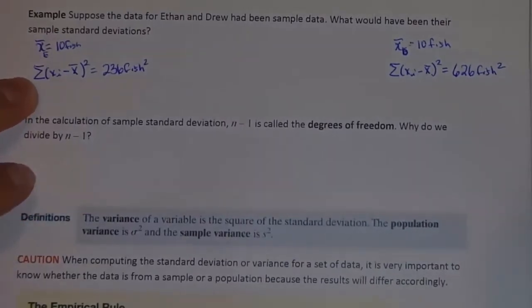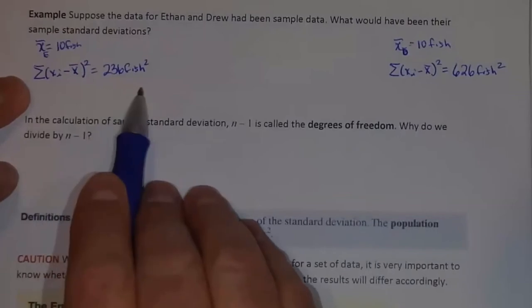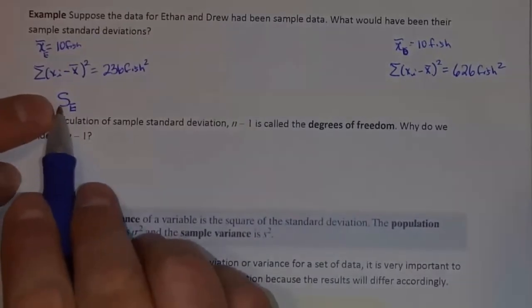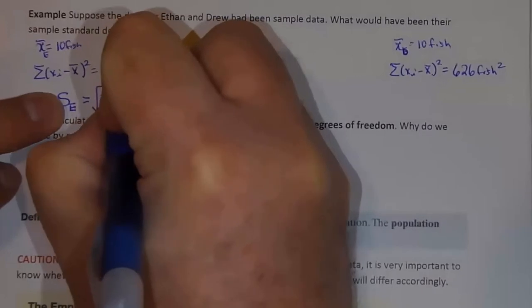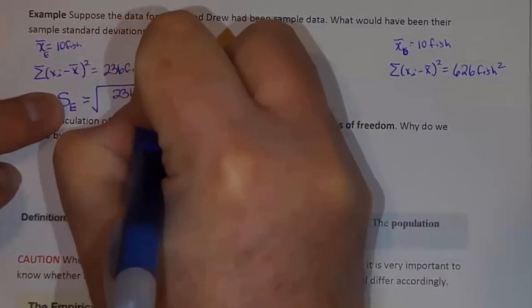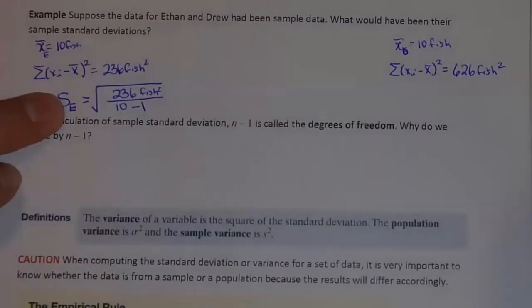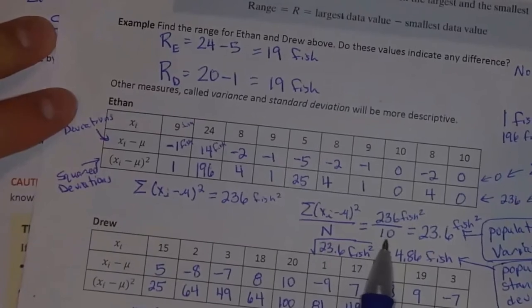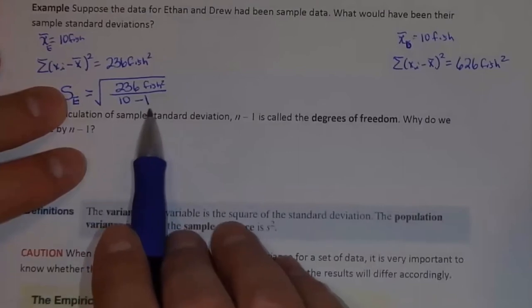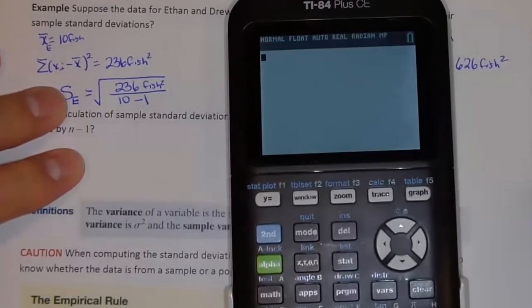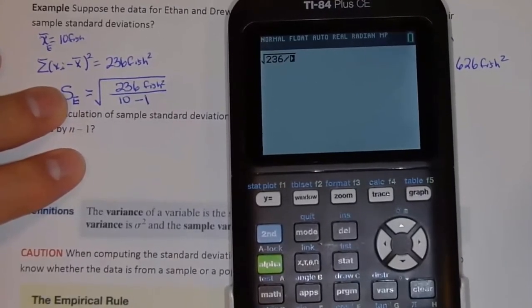So what would be different if I wanted to calculate Ethan's sample standard deviation? His sample standard deviation — denoted S sub E, S for standard deviation, E for Ethan — would equal the square root of 236 square fish divided by 10 minus 1. So now, if it was a population, I divided by 10. Because it's a sample, I'm going to divide by 10 minus 1. In other words, I'm really dividing by 9. So if I take the square root of 236 divided by 9, that is equal to 5.12.